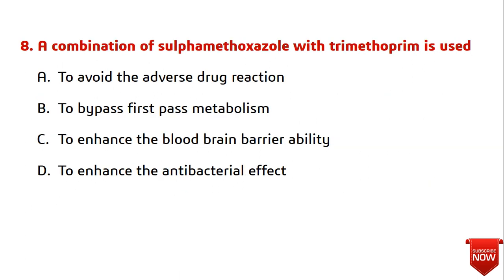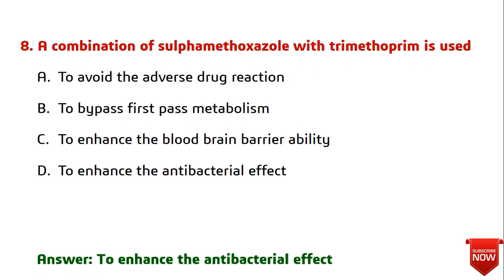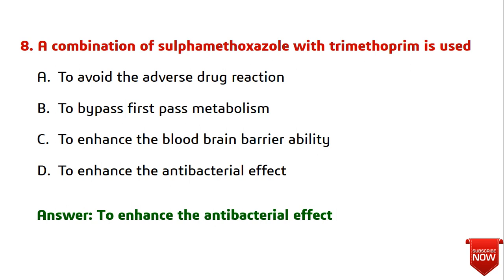Question eight: a combination of sulfamethoxazole with trimethoprim is used for what purpose? It is used to enhance the antibacterial effect. It is not used to avoid adverse drug reactions, bypass first-pass metabolism, or enhance blood-brain barrier penetration. The answer is to enhance the antibacterial effect.